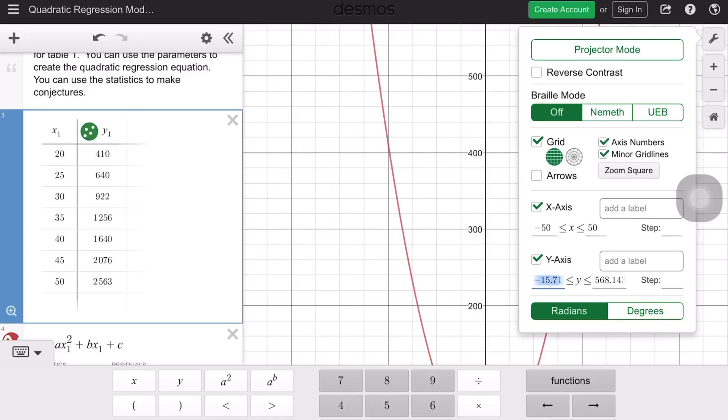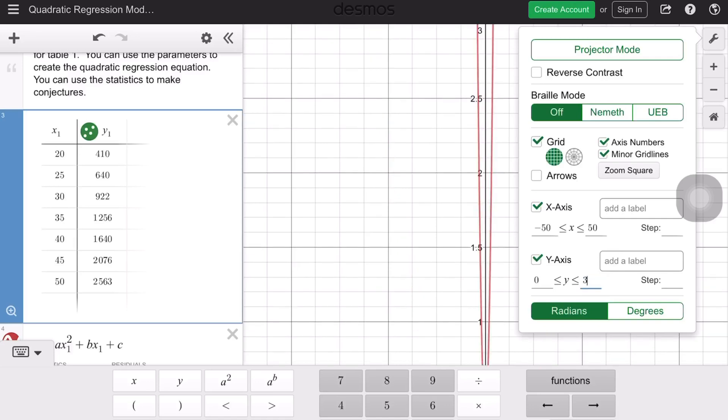I don't need it to go out that far, it looks like. Let's try negative 50 to positive 50, then y-axis, let's go from 0 to 3,000, how about that? That might work for us.